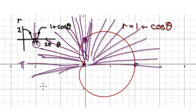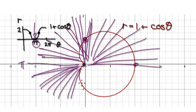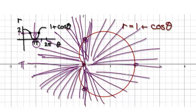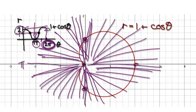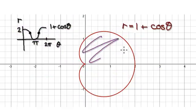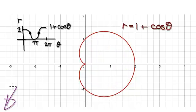As you continue increasing theta, by the time you get to 3 pi over 2, the radius will be 1 — that's this bit here. And then by the time you get to 2 pi, the radius will be back to 2. So work out this area here. Press pause and have a go.